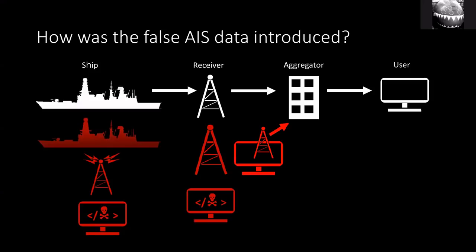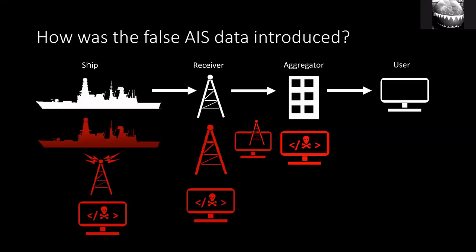You don't have to attack an actual receiver — you could falsify being a receiver and trick the aggregator into accepting your data. If you're thinking really big, you could attack the aggregator itself. Alternatively, you could attack the user. The takeaway here is not the specifics of each attack point, but rather that there are lots of places where the process can be attacked. Feel free to add more in the comments.